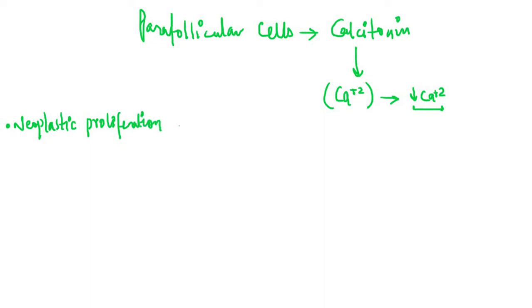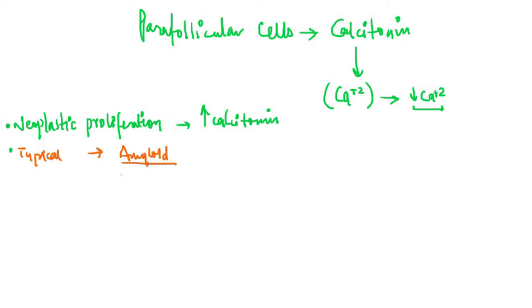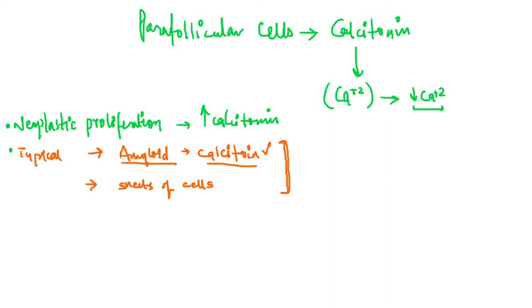As a result of neoplastic proliferation, these cells will produce an increased amount of calcitonin. When we take a biopsy of this thyroid gland, it will show a typical pattern called amyloid stroma. These amyloids are basically deposits of calcitonin. The calcitonin forms amyloid deposits, and within these amyloid deposits there will be sheets of cells which are the neoplastic parafollicular cells.